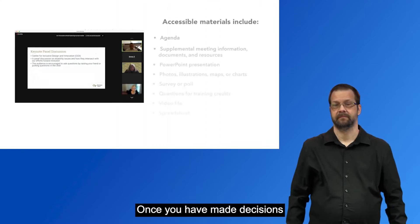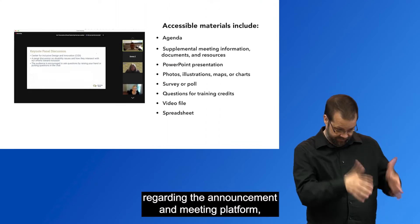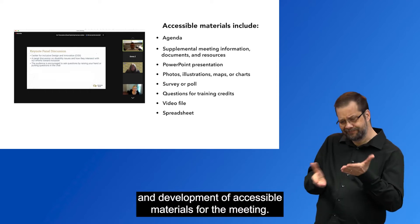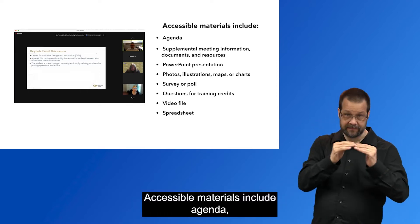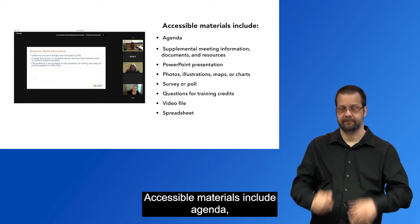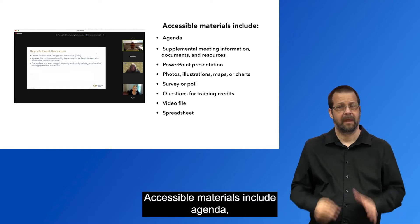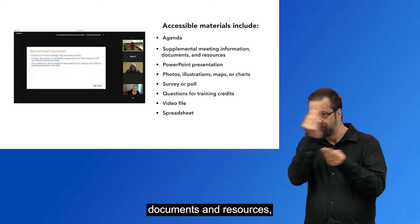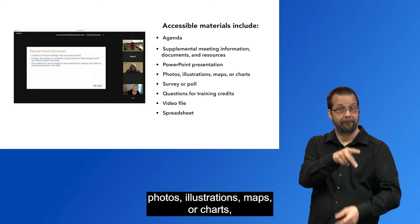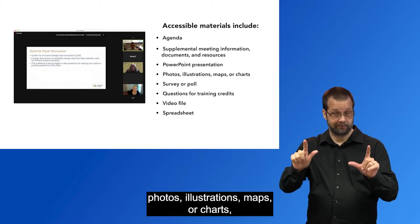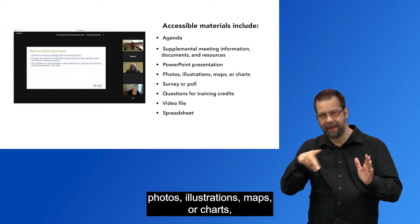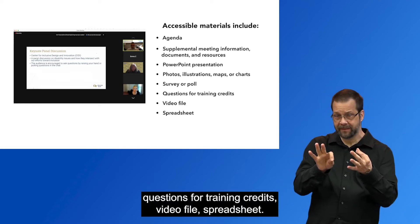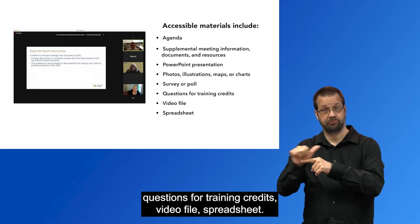Once you have made decisions regarding the announcement and meeting platform, you will want to turn to the design and development of accessible materials for your meeting. Accessible materials include: agenda, supplemental meeting information, documents and resources, PowerPoint presentations, photos, illustrations, maps or charts, survey or poll questions for training credits, video files, and spreadsheets.